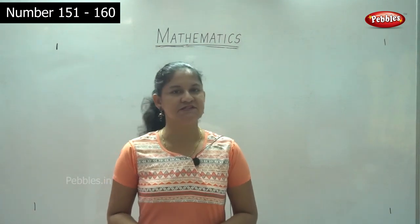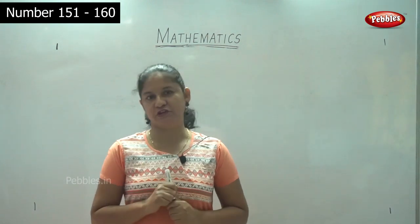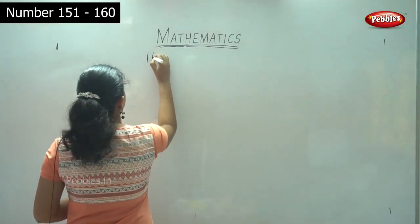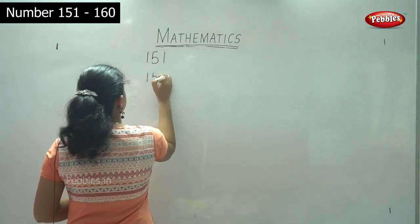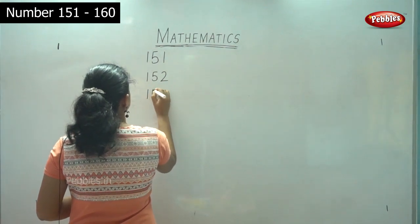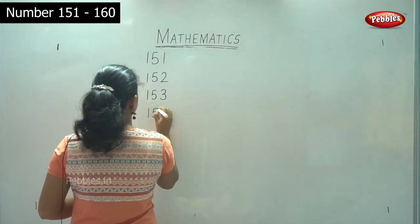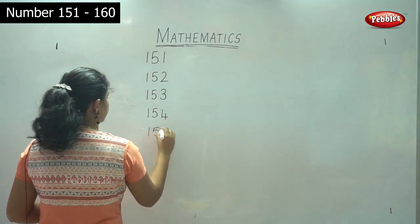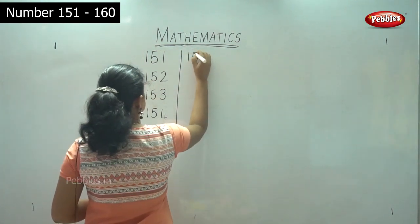Now we will be seeing numbers from 151 to 160. So first we will do how to write the numbers. So 151, 152, 153, 154, 155, 156.